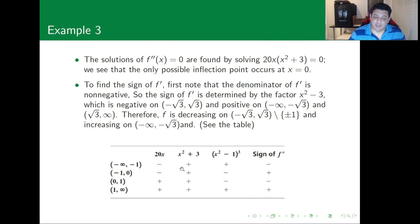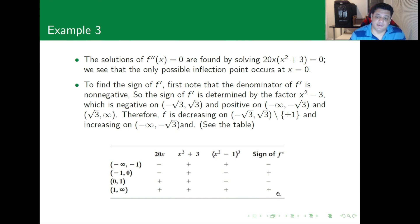Multiplying the signs: from -∞ to -1 the second derivative is negative; from -1 to 0 it is positive; from 0 to 1 it is negative; and from 1 to ∞ it is positive. There are sign changes at -1, 0, and 1, so -1 is an inflection point and 0 is another inflection point.